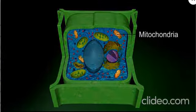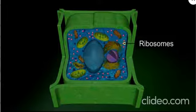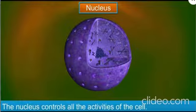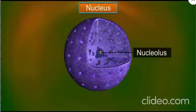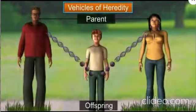What are the other organelles present in a plant cell? They include mitochondria, Golgi apparatus, ribosome, and endoplasmic reticulum. The dark spherical structure in the cell is the nucleus, and it controls all the activities of the cell. It contains the nucleolus, which is a smaller spherical body. The nucleus also contains thread-like structures called chromosomes.